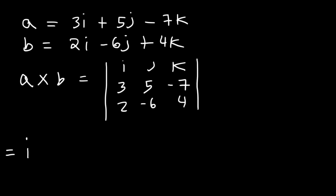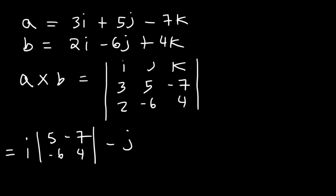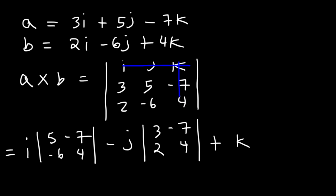So it's going to equal i — i is found in row 1, column 1 — and it leaves behind the 2 by 2 matrix: 5, negative 7, negative 6, and 4. Then it's going to be minus j. Now j is in the first row, second column, so we have left over 3, negative 7, and 2, 4. Next we have positive k. k is in the first row, third column, which leaves behind 3, 5, and 2, negative 6.